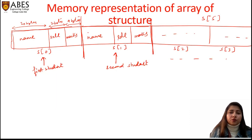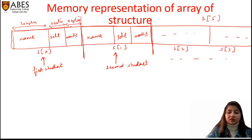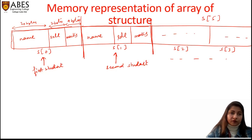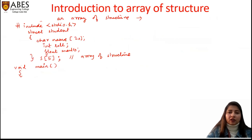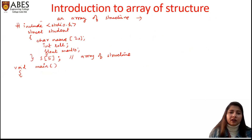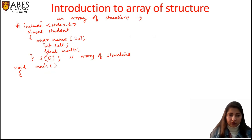The situation where we use an array of structure is when we want to store or create a record or database for more than a single entity. For example, storing the database of 20 students of a university, or 150 employees of an organization. Whenever we want to store information for more than one entity, we can use an array of structure. Now let us complete this example — creating a record for 5 students.